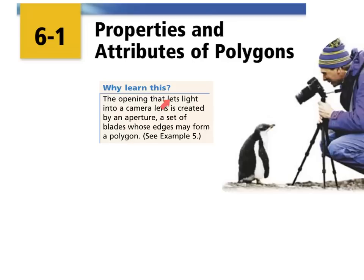So why do we need to know this? For example, in this camera lens, the opening that lets light into a camera lens is created by something called an aperture. An aperture is a set of blades whose edges may form a polygon.